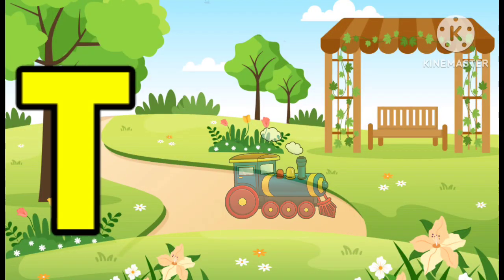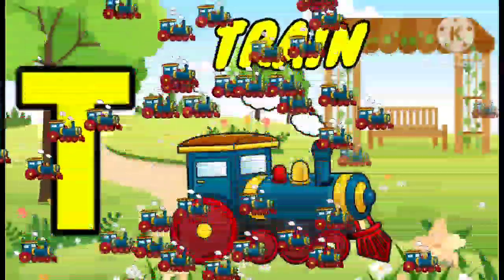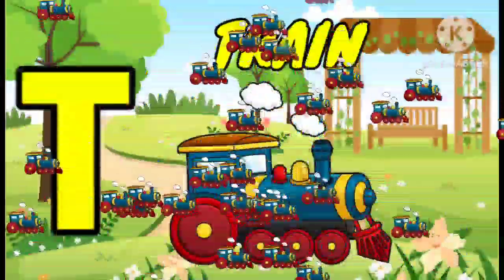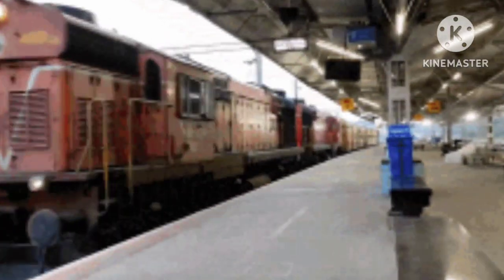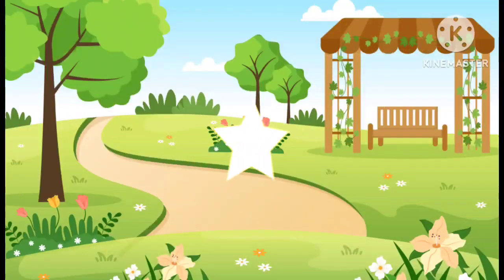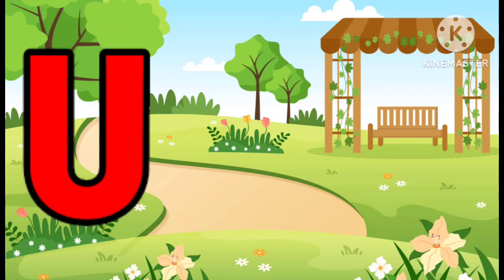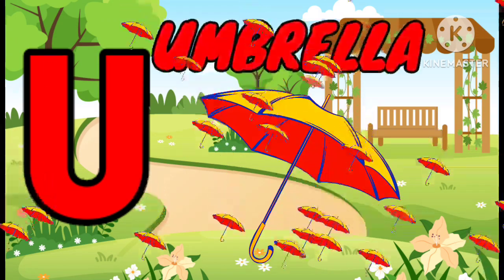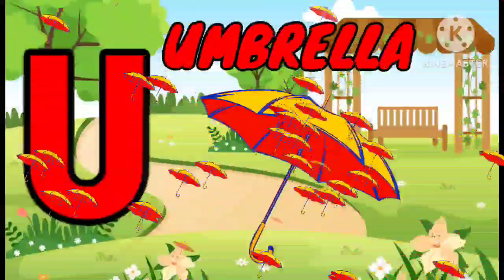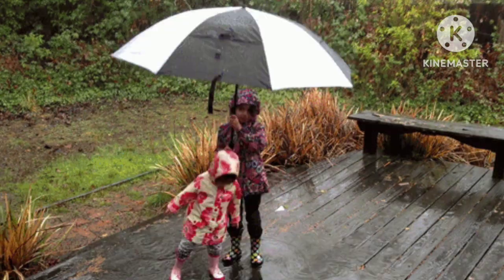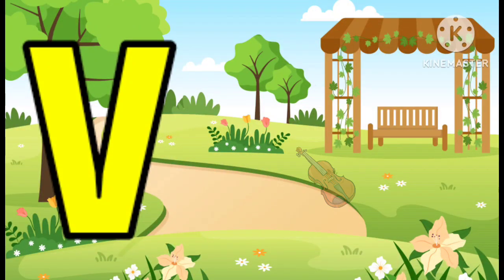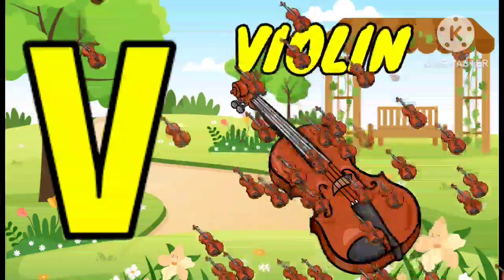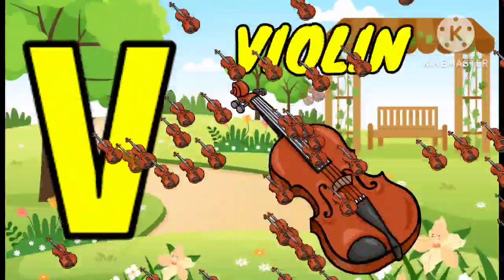T. T is for Train. U. U is for Umbrella. V. V is for Violin.